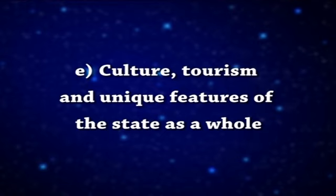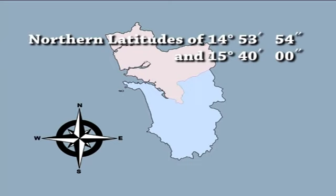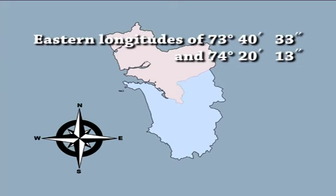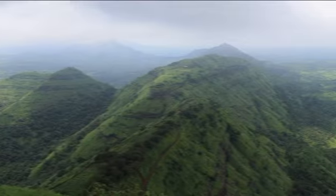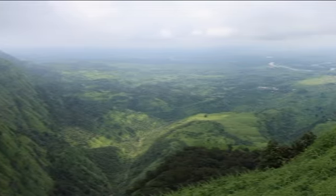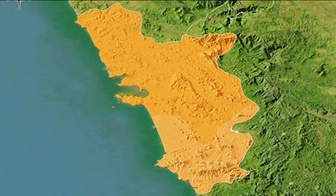The physiographic setting: Goa lies between the northern latitudes of 14°53'54" and 15°40'00" and eastern longitudes of 73°40'33" and 74°20'13". Most of Goa is a part of the coastal country known as the Konkan, which is an escarpment raising up to the Western Ghats range of mountains, which separates it from the Deccan Plateau. Sonsaga, with an altitude of 1167 meters, is the highest point in the region. Goa has a coastline of 101 kilometers.